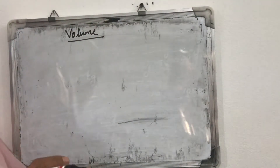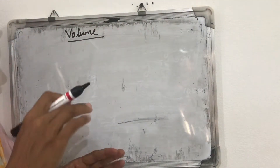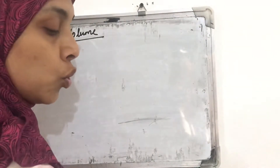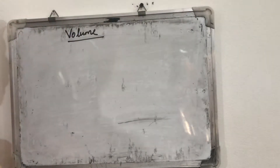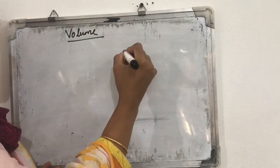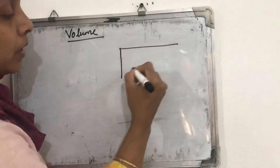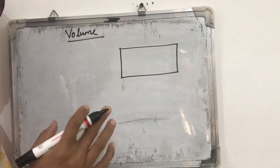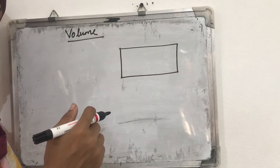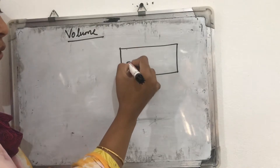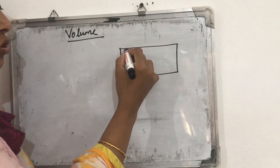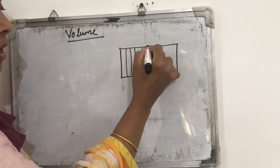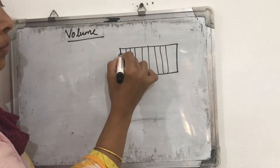For finding the volume of a solid, we need to divide it into small unit cubes. Similarly, in the case of plane shapes, do you remember how we find the area of a rectangle or square? First we divide the rectangle into small unit squares, and then we count how many unit squares are there — that gives its area.